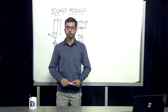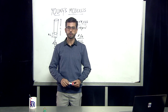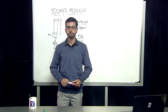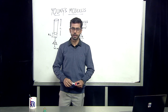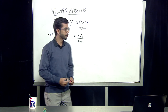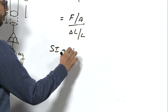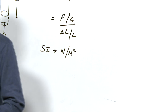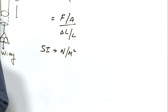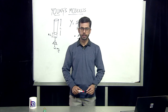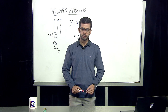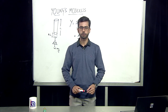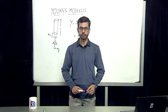The dimension of force is given in Newtons and that of area in meters squared. Therefore, the SI unit of Young's modulus of elasticity is Newton per meter squared — the same unit as force per unit area.